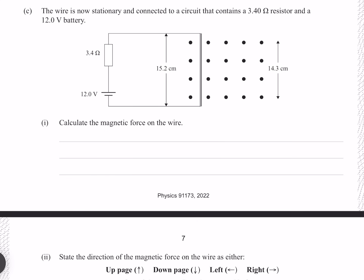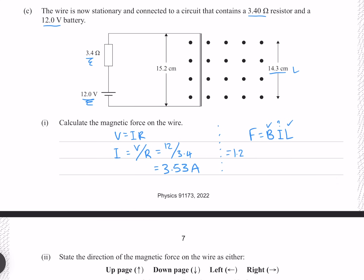The wire is now stationary and connected to a circuit with a 3.4 ohm resistor and a 12 volt battery. Calculate the magnetic force on the wire. Force on a current-carrying wire is F = BIL. Using V = IR, current = 12 / 3.4 = 3.53 amps. Substituting into F = BIL gives 6.06 × 10⁻⁴ newtons to three significant figures.